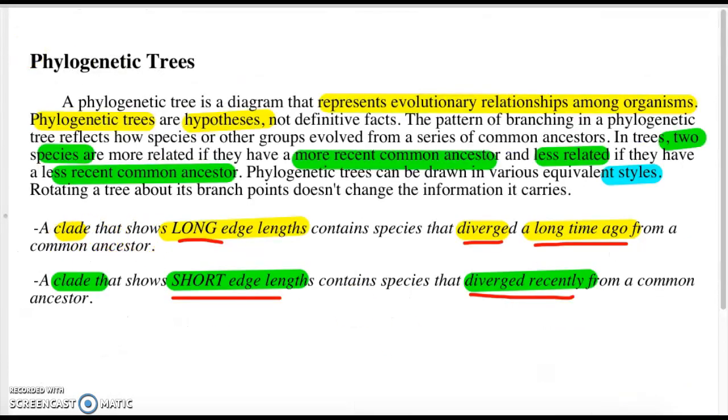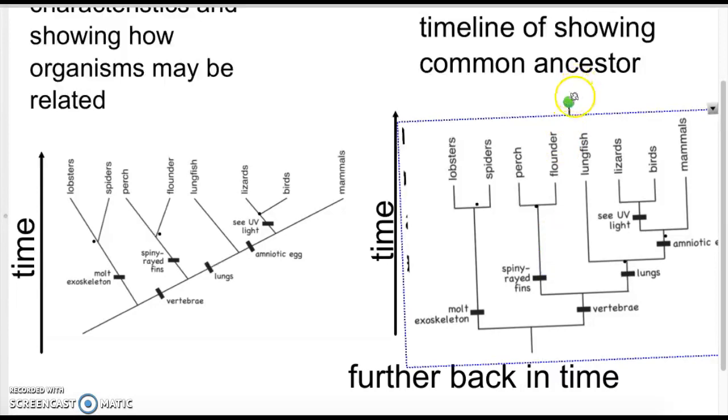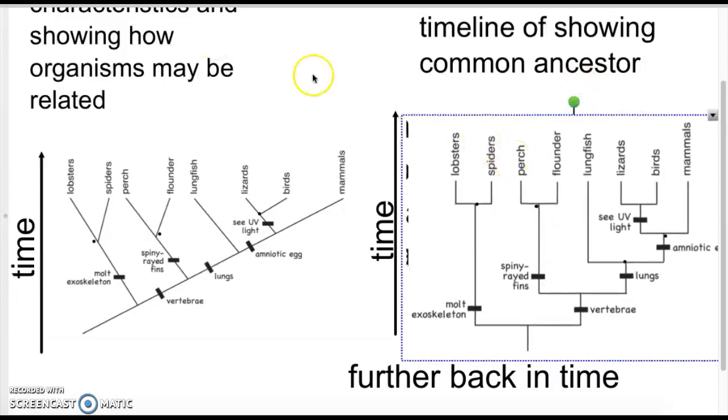If you are on a clade, and you see that the line is really long, it contains species that have diverged from a very long time ago. They have a very ancient common ancestor. If you see a clade that's short, that means they divide. They have diverged from a more recent common ancestor. If you look here at this lobster, spider, perch situation, the ones that have a most recent common ancestor are going to be the organisms that diverged most recent on the time scale.